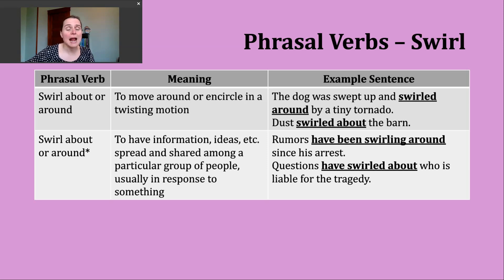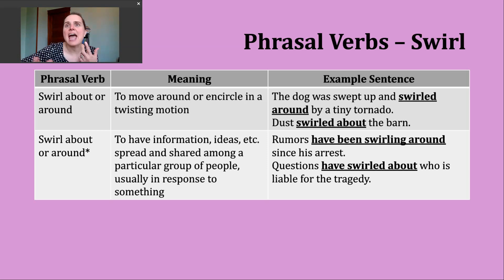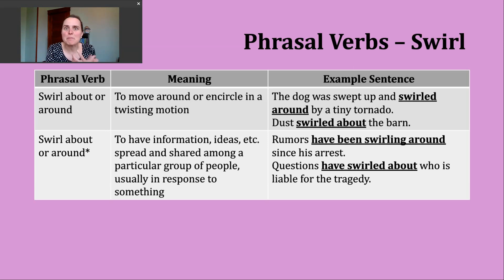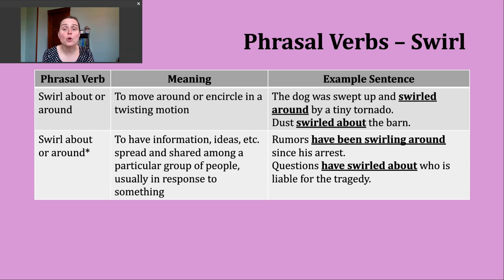Rumors have been swirling around since his arrest. Here the first action is someone being arrested, and now people are beginning to talk — speculating about the reasons. We can't really see information, but it moves and passes through like dust in an earlier example. Another example: questions have swirled about who is liable for the tragedy — meaning some horrible event occurred and people are discussing who is responsible.